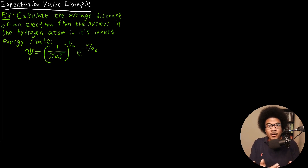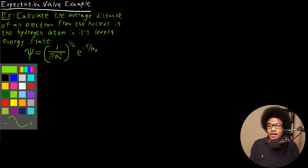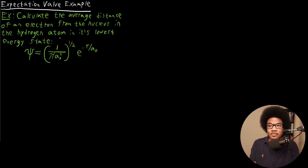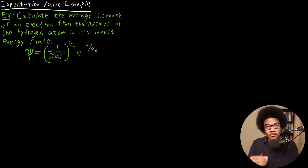In this video, I wanted to work through an example of calculating an expectation value. So let's look at the problem. It says: calculate the average distance of an electron from the nucleus in the hydrogen atom in its lowest energy state. Here I'm giving you the wave function for the lowest energy state in the hydrogen atom.